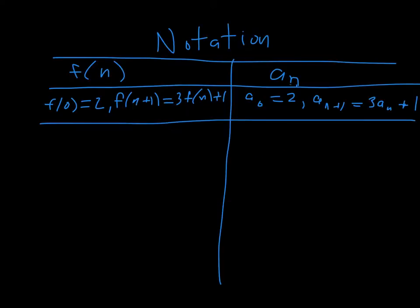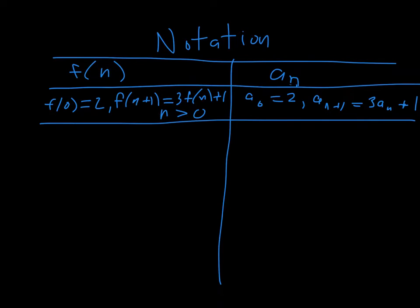Just a brief note about notation. Sometimes we'll use f(n) function notation, like in the previous example where f(0) = 2 and f(n+1) = 3·f(n) + 1. But sometimes we can give these recursive functions as sequences — defining a₀ = 2 and then a_(n+1) = 3·aₙ + 1. We're not using function notation anymore, we're using sequence notation, but really it's the exact same thing happening — nothing new is going on.